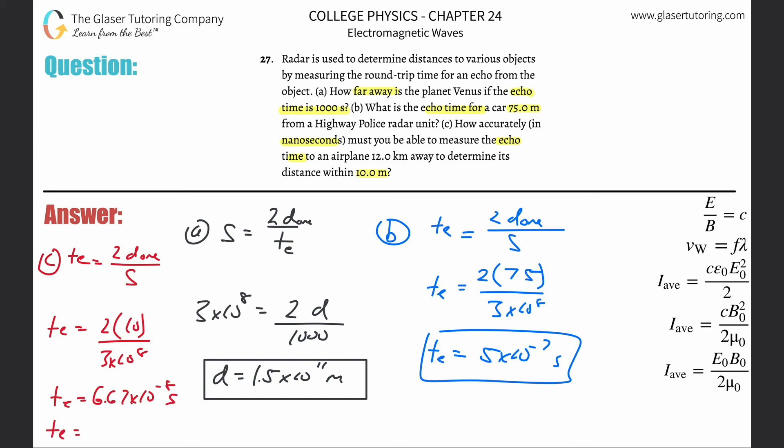But they want it in nanoseconds. So divide that then by, if you want 10 raised to the minus ninth, and that'd be 66.7, 66.7 nanoseconds.